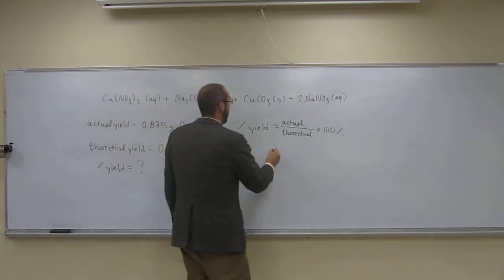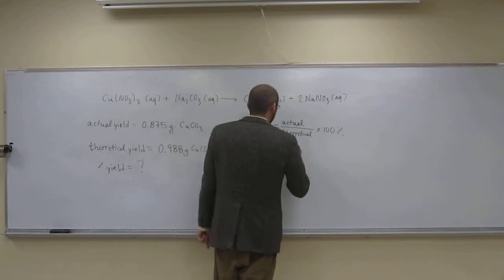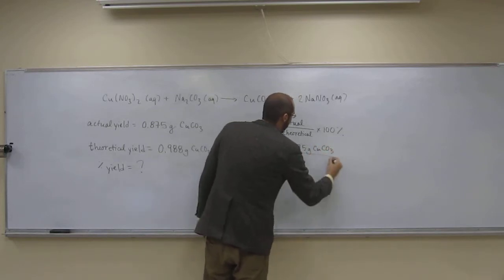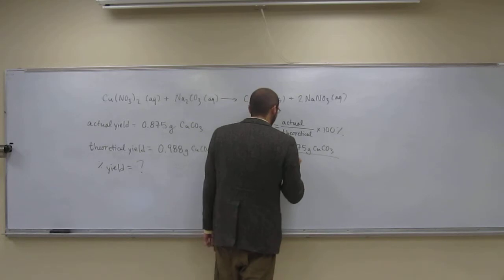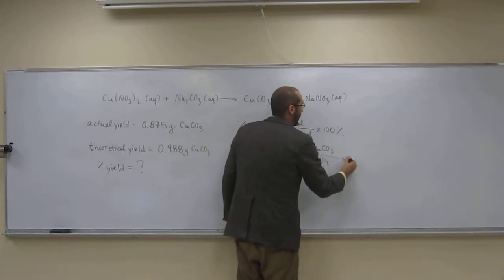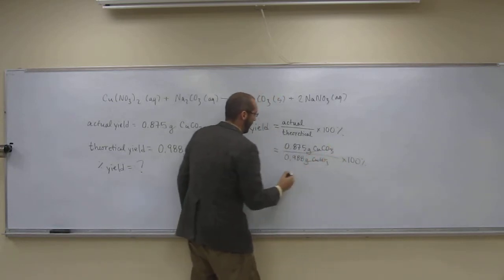So, the actual yield, 0.875 grams of copper-2-carbonate divided by the theoretical 0.988 grams copper-2-carbonate times 100%. Cancel, cancel.